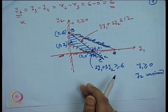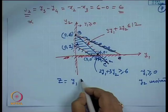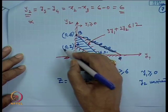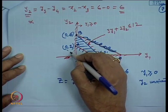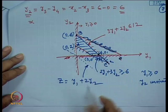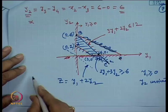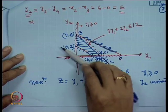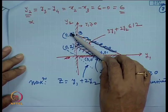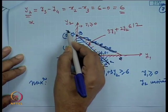Our objective function is z = y1 + 2y2, which we want to maximize. Graphically, when the function value is 0, the line passes through the origin. We seek values of y1 and y2 in the feasible region where the function is maximum. Moving this line parallel to itself, the maximum value is obtained at point B — the line through the origin parallel to the objective function.